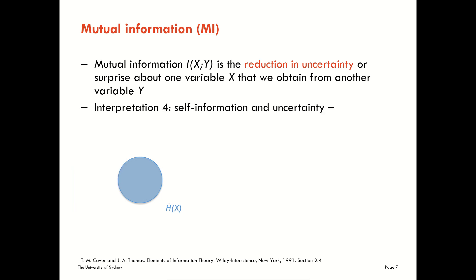The next interpretation I want us to look at is to think about self-information and uncertainty. This is a reason why we often conflate the terms information and entropy. Here on the diagram we're coming back to a Venn diagram view where we're just looking at the uncertainty about our variable x.